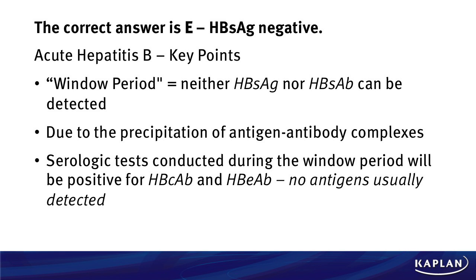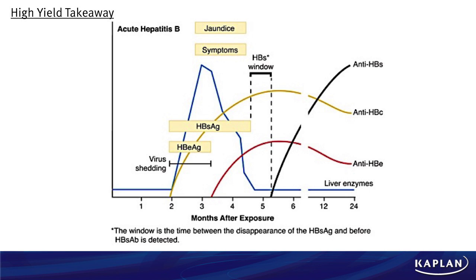The biggest takeaway from this question is the hepatitis B serologic graph — you've probably seen it before, and after this question you won't forget it. The window period specifically deals with when the HBS antigen disappears and when the HBS antibody first appears. Notice also that jaundice and most symptoms resolve before the window period, but the antibodies for HBC and HBE remain positive through the window period. Study this graph, know it, be able to explain it — questions about the window period, antigens, and antibodies for hepatitis B are common on test day.